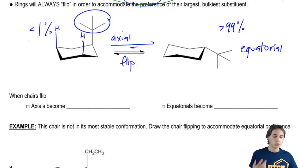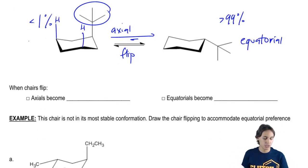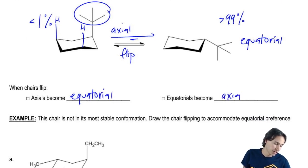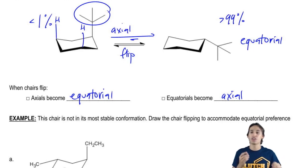So as I just said, when chairs flip, remember that axials are always going to become equatorial and equatorials become axial. So any time you flip, you're giving something in the axial position an opportunity to become equatorial.